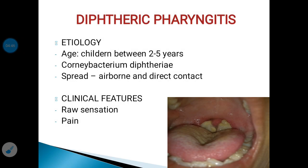Another acute specific infection is diphtheric pharyngitis. Nowadays, the incidence of diphtheria is reduced because of immunization. The causative organism is Corynebacterium diphtheriae. It is generally seen in children between 2 to 5 years of age, and the infection spreads by airborne route or by direct contact.